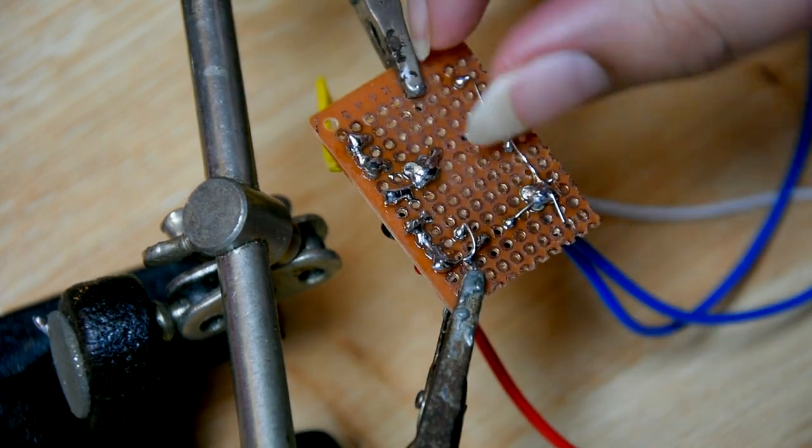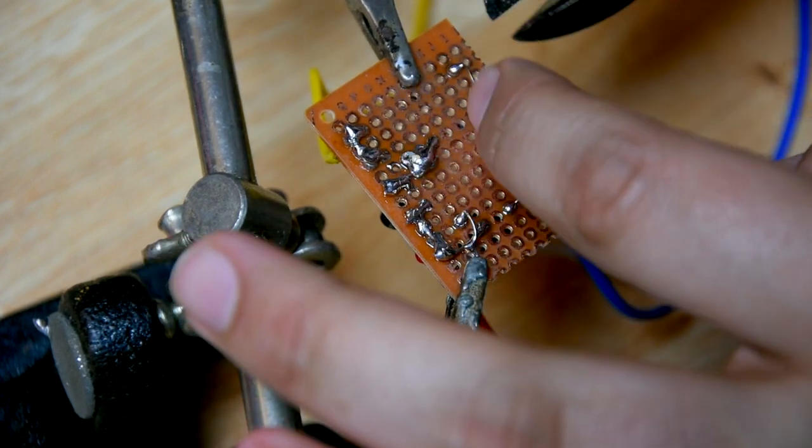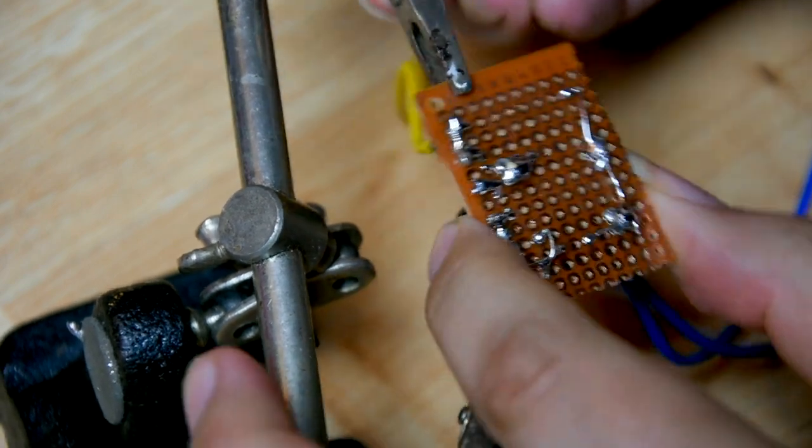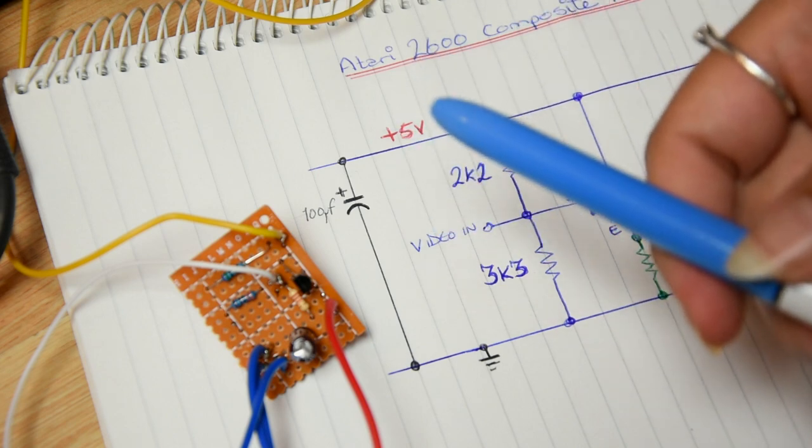And make sure you cut the excess leg off because you don't want it to bend around and create a short somewhere. So everything is good and there it is, built. And since I haven't received my RCA sockets still yet, what I'm going to do is just call it a day for now.